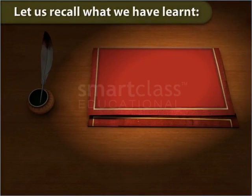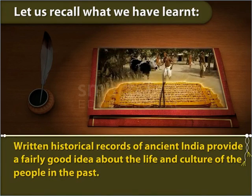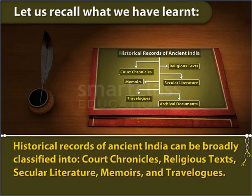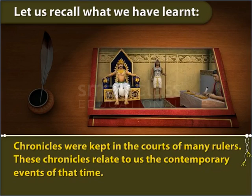In summary: historians rely on a number of sources to reconstruct the human past. Written historical records of ancient India provide a fairly good idea about the life and culture of people in the past. Historical records of ancient India can be broadly classified into court chronicles, religious texts, secular literature, memoirs and travelogues. A chronicle is an account of events in order of time, kept in the courts of many rulers, relating to us the contemporary events of that time.